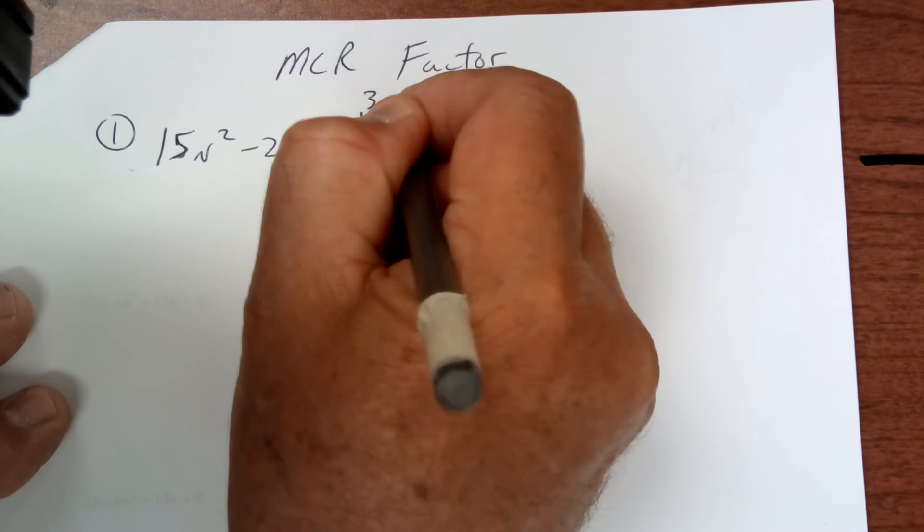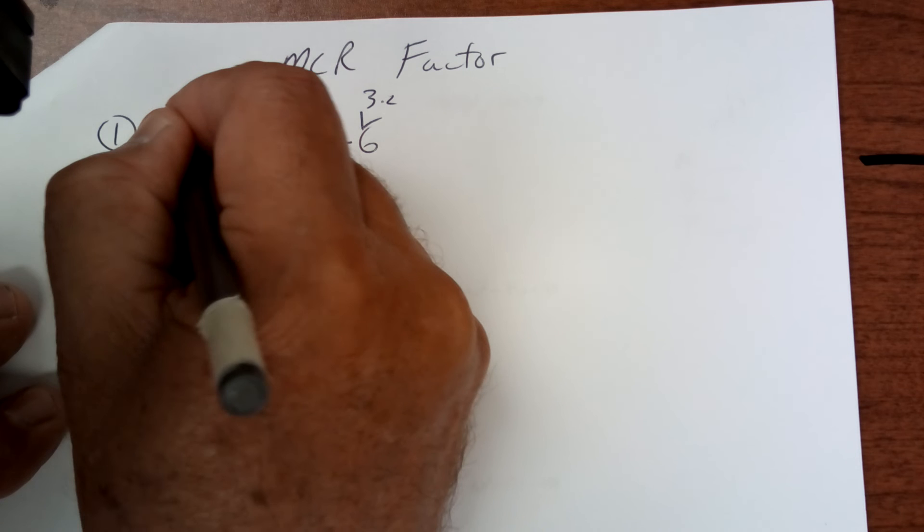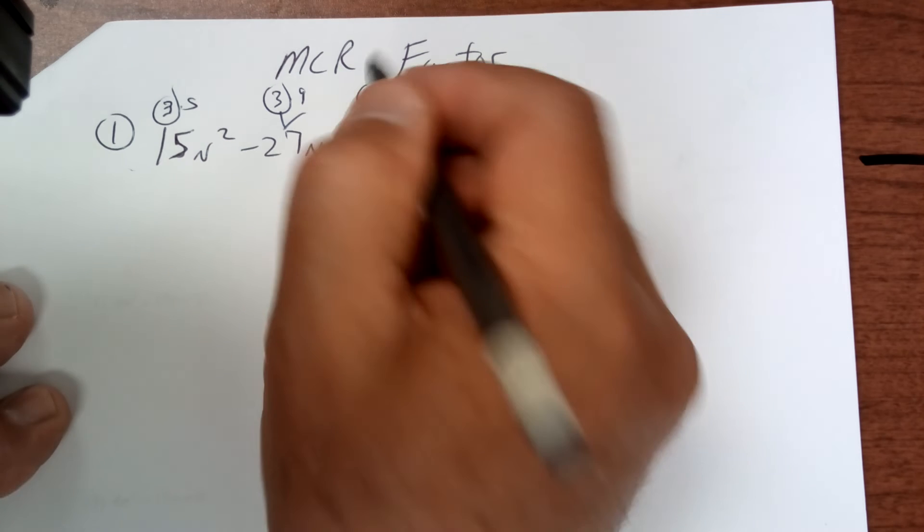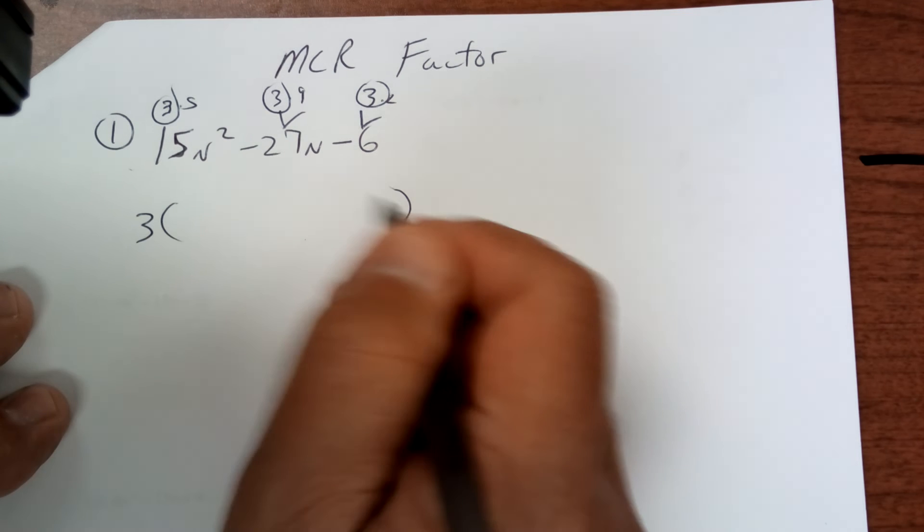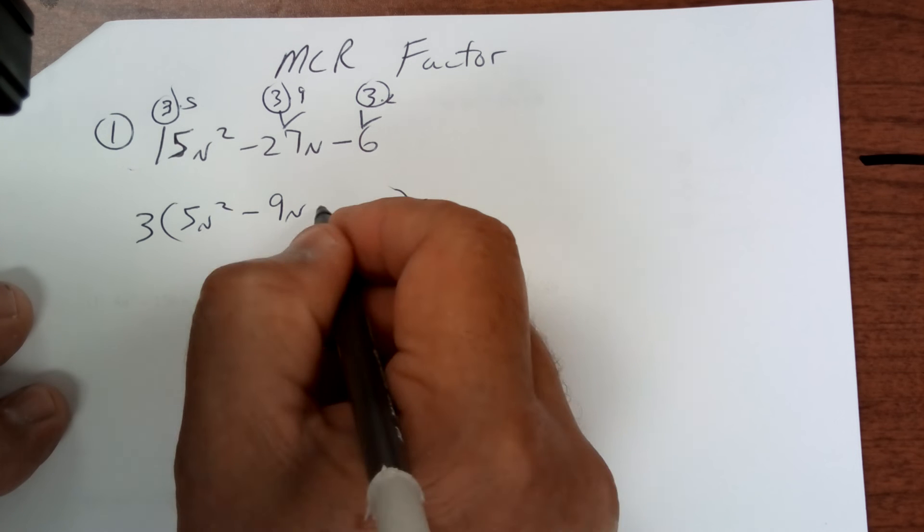So 3 times 2, 3 times 9, 3 times 5. So I can take a 3 out. And I almost missed that. So you've got to take a 3 out. So it's going to become 5n squared minus 9n minus 2, which makes it easier.